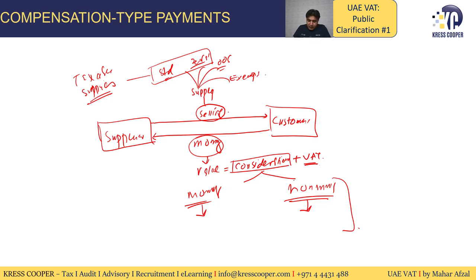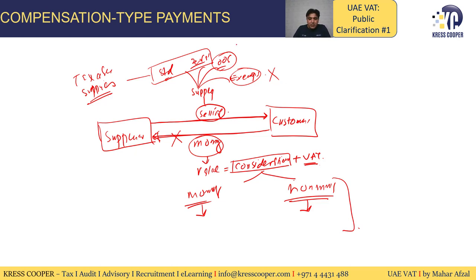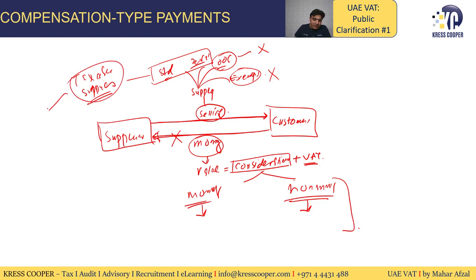There are two legs to every transaction: one is the sale, and the second is the consideration. Whenever a supplier is supplying anything and not getting any consideration, we need to look into this. If this is an exempt supply, the FTA will not ask any questions. If it is an out of scope supply, the FTA will also likely not ask questions as there is no tax involved. But whenever a supplier is supplying any taxable supply without getting any consideration from the customer, then the question of deemed supply will arise.